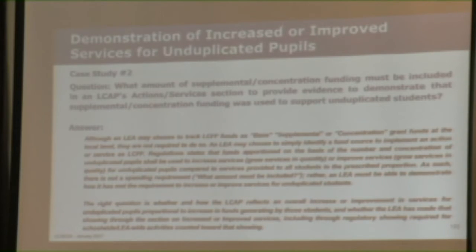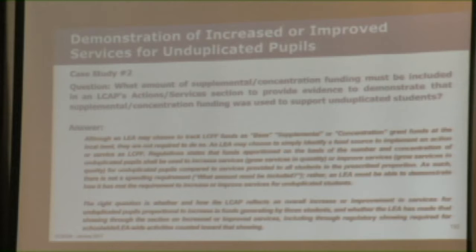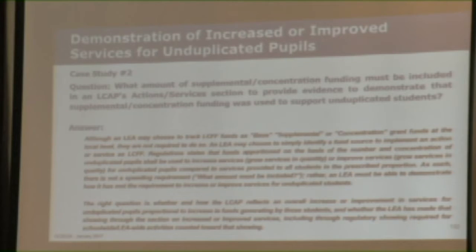If you had a district that submitted an LCAP and very few actions were identified as specifically for meeting the increase or improve requirement, how do they demonstrate proportionality then? I'm getting a little confused on that. What would be the criteria to demonstrate proportionality if you didn't see significant actions and services for unduplicated pupils?